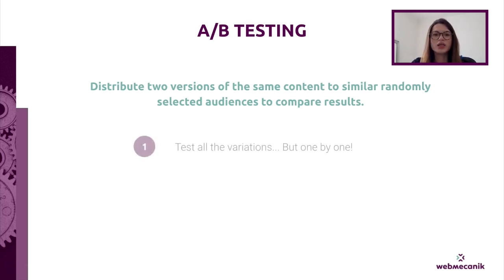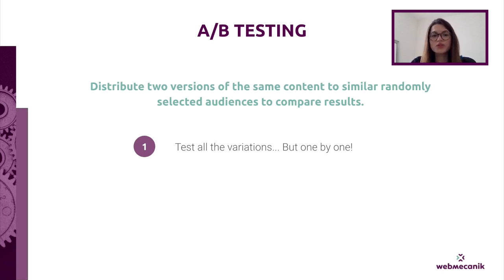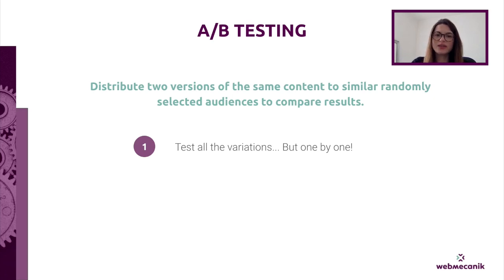How to succeed with A/B testing? There are four tips. First, test all the variations but one by one. You can test many parameters — colors, layout, copy, font size, content — all factors that can increase your conversion, click-through, and open rates. The combinations are infinite, and the more parameters you test, the more you optimize your content. But you need to test variables one by one to analyze them properly; otherwise you won't know what made the difference.